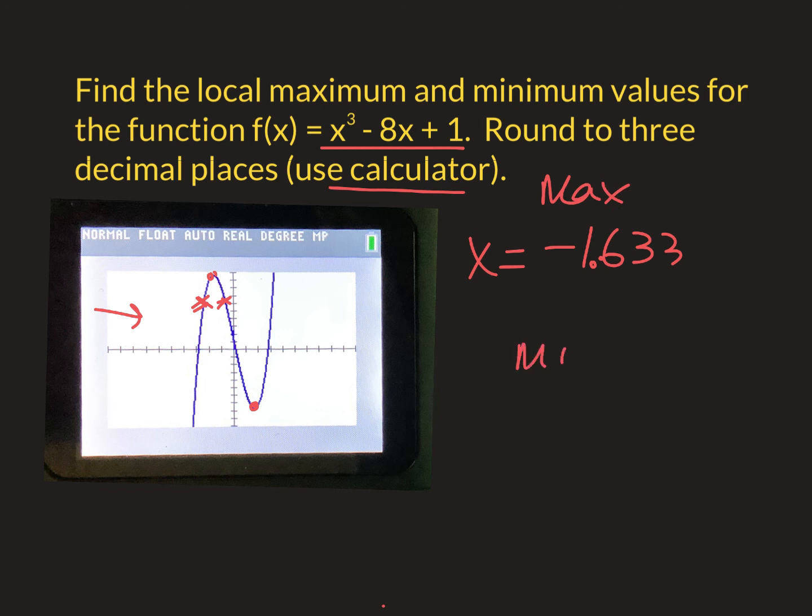Now to find the minimum, again, please try this with me. It's right down here. Hit second trace. Number two. Trace down close to it, but stay on the left side. Because your calculator says left bound. Stay on the left side. That's the left side right there of the answer.